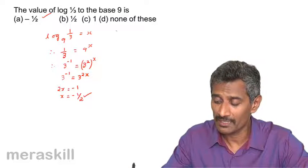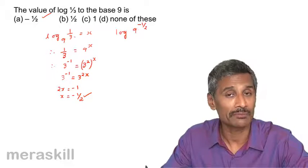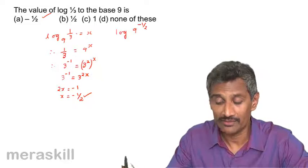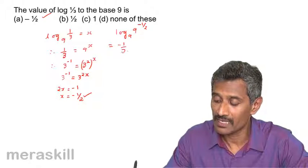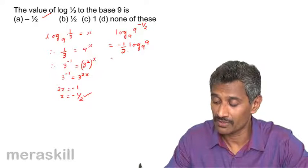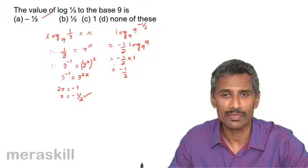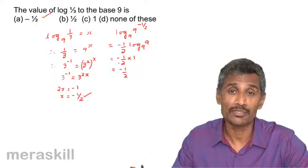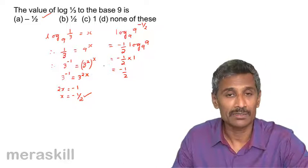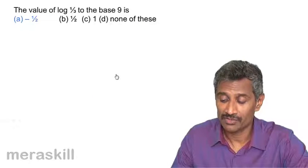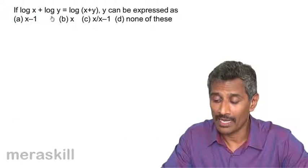We can also verify: log 9^(−1/2) to the base 9 means −(1/2) log 9 to the base 9, which is −1/2 × 1 = −1/2. You can use any of these approaches depending on how the expression is formatted. The answer is confirmed as −1/2.